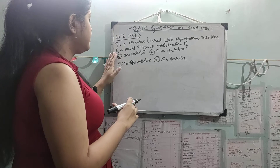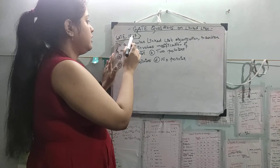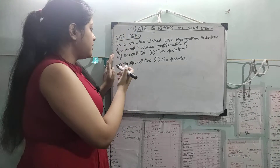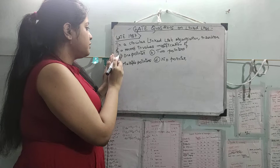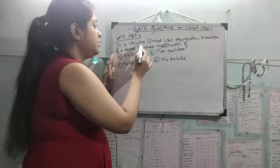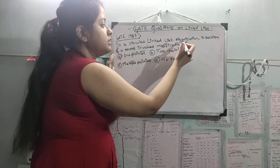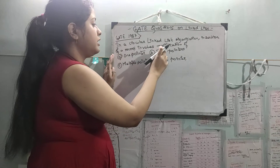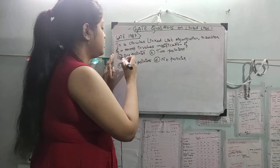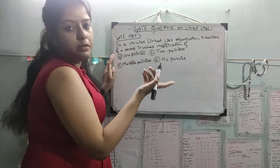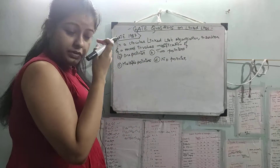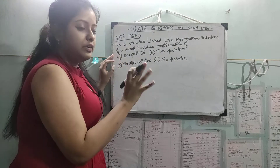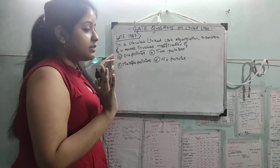Let's take this question. It was asked in GATE 1997, way back. The question is good. In a circular linked list organization, insertion of a record involves modification of how many pointers? This question I have seen in a lot of test series.